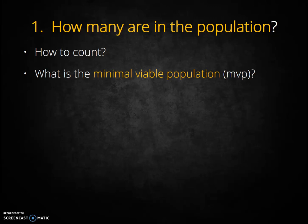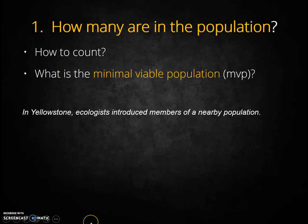If a population nears the minimum viable population, ecologists have a couple of options of last resort. They can introduce members of other populations. In Yellowstone, population ecologists knew that there were a few packs that had migrated into the northern Rockies from Canada. To facilitate a faster and more successful establishment, they decided to capture additional wolves from Canada and introduce them into Yellowstone and the neighboring study areas.